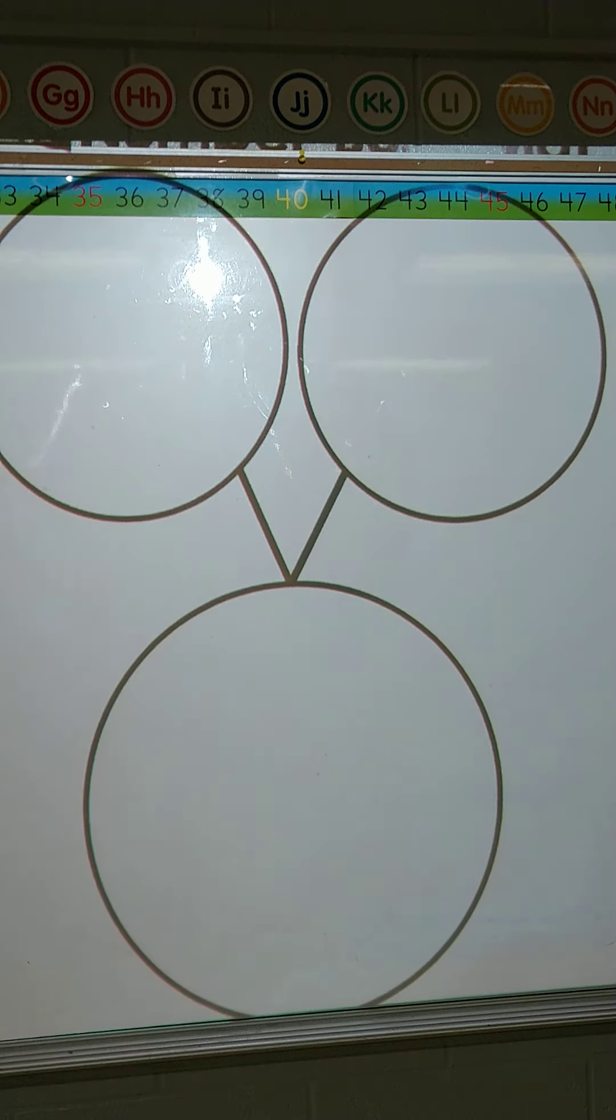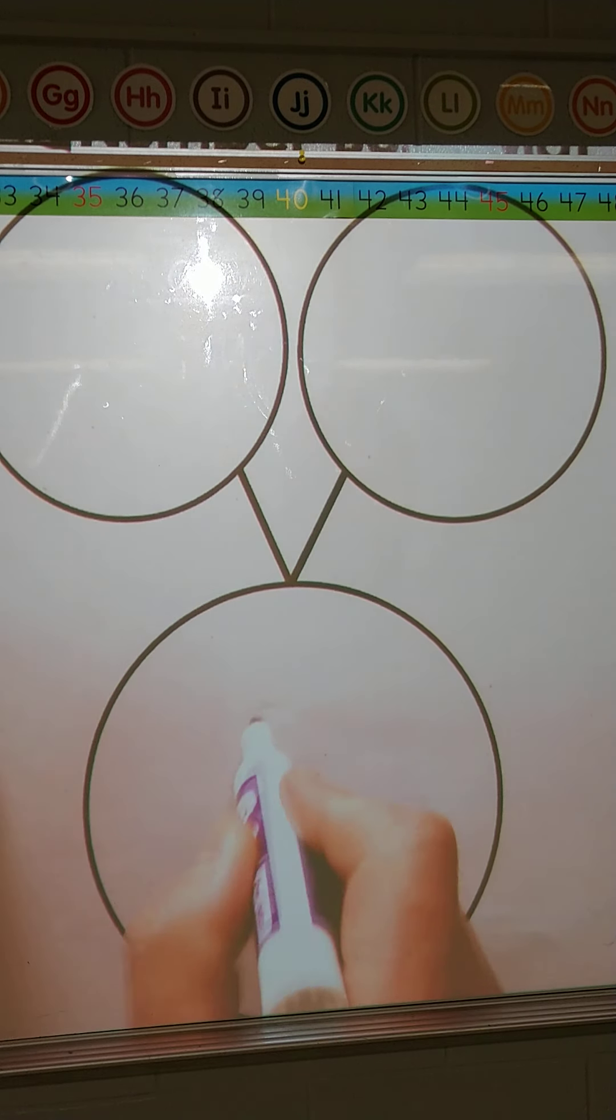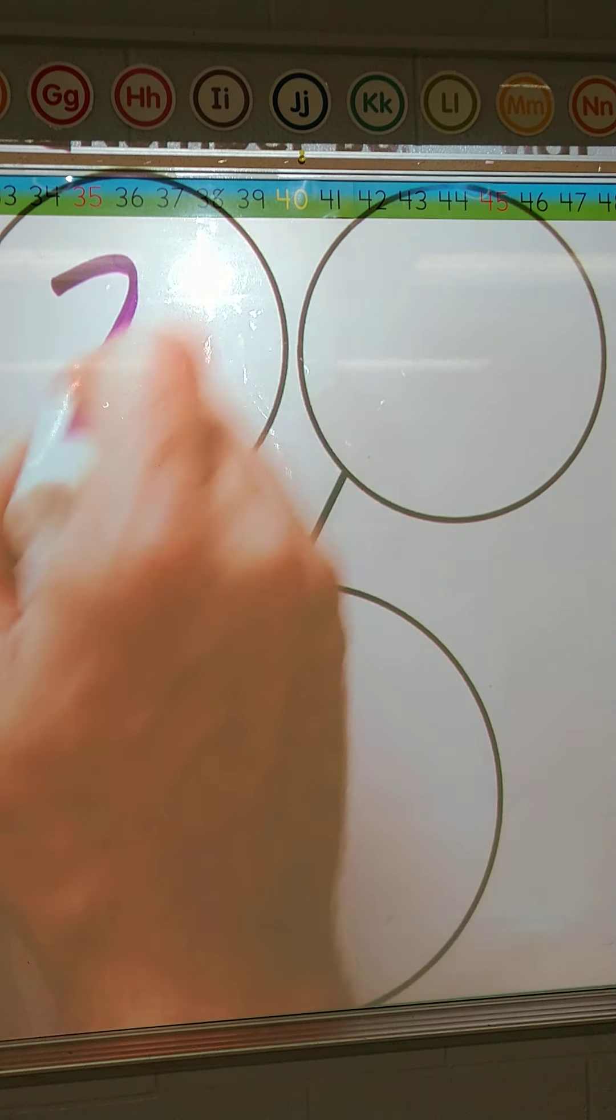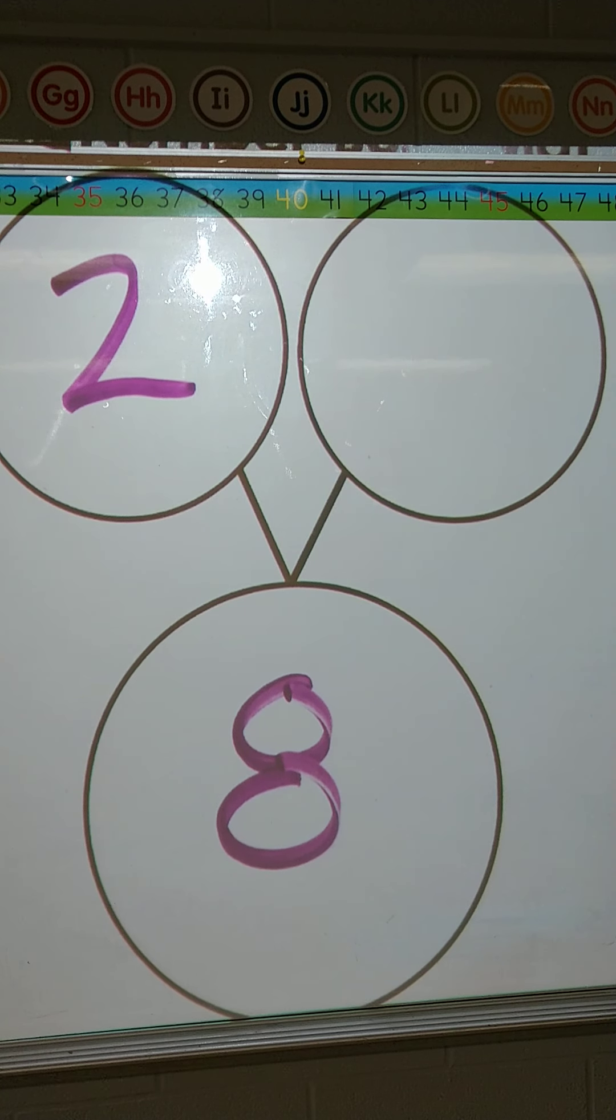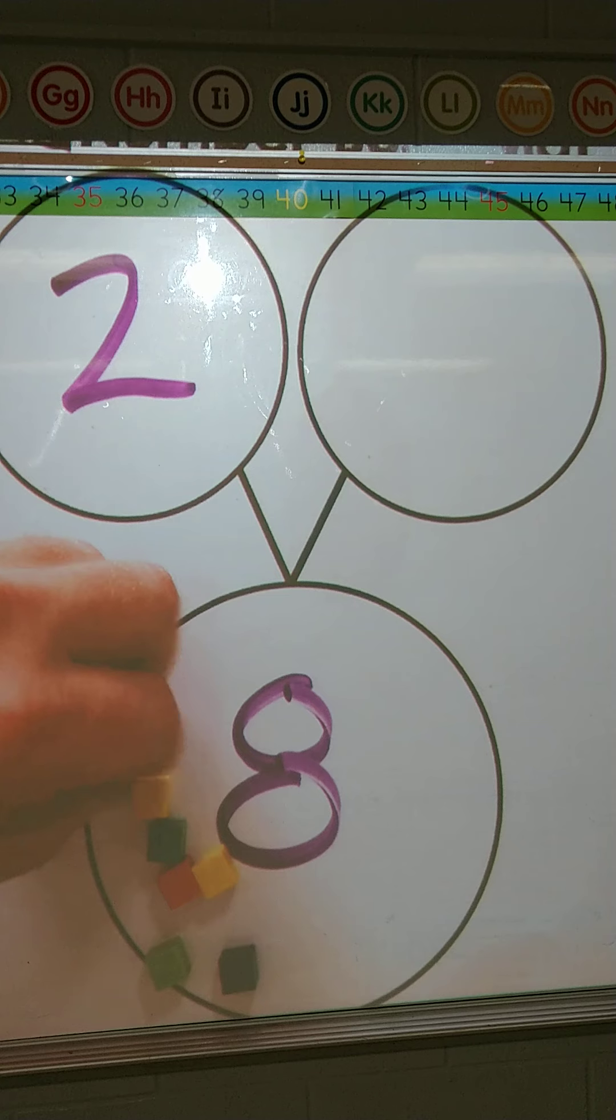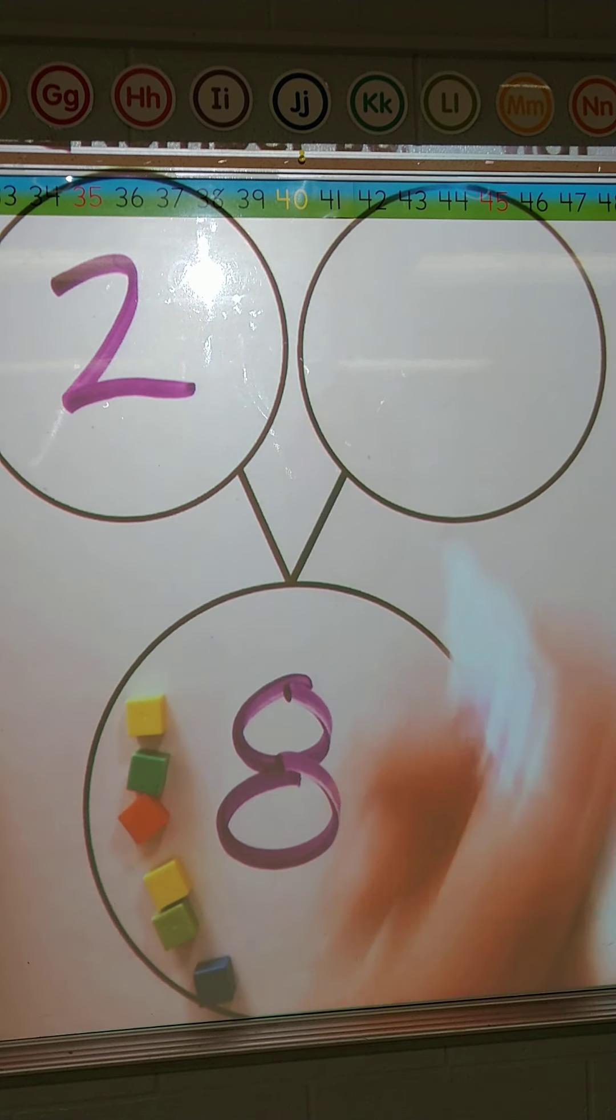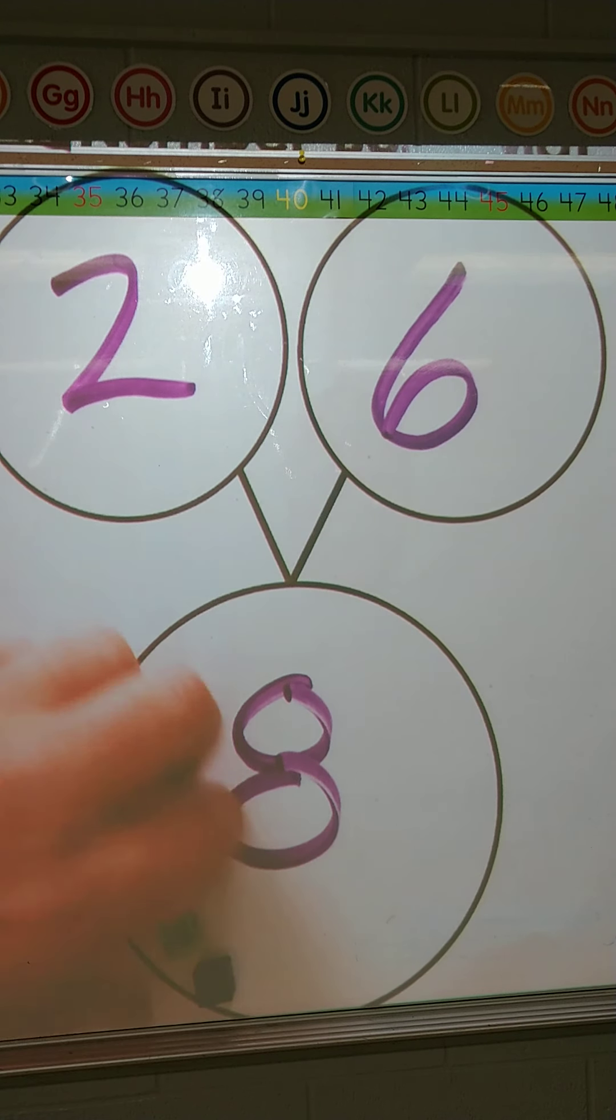Now what happens if we have the bigger number on the bottom? So we have the bigger number on the bottom. So let's start 8. And we have a 2 here. 8 is the biggest number so we know this other part has to be smaller than 8. So if we have 2 and 8, 8 is our whole, 2 is our part, another part. So if I have 8 blocks, 1, 2, 3, 4, 5, 6, 7, 8. And then you take away 2. How many do you have left? 1, 2, 3, 4, 5, 6. So we know that 2 and 6 can come together to make 8.